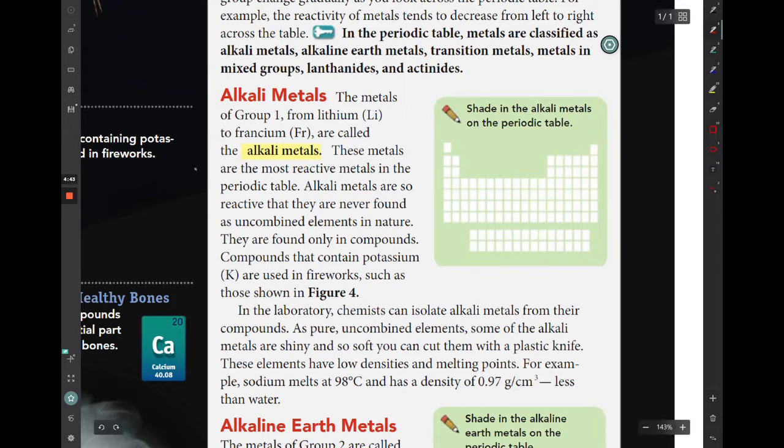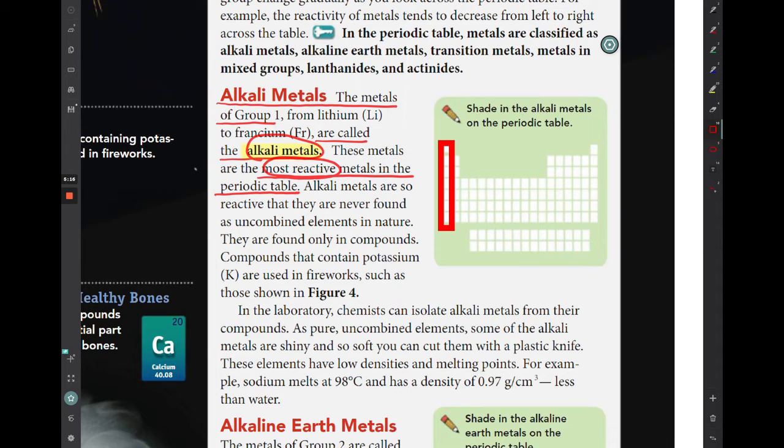The first group, the first column on the periodic table, is what we call the alkali metals. So the metals of group 1 are called the alkali metals. They are the most reactive metals in the periodic table. So the metals that we find in this first group, or this first column, those are the most reactive metals that we will find on the periodic table. Because they are so highly reactive, they don't want to exist by themselves. So you will only find these in compounds or combined with other elements. They are never found as uncombined elements.